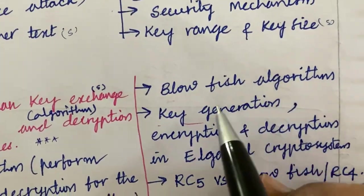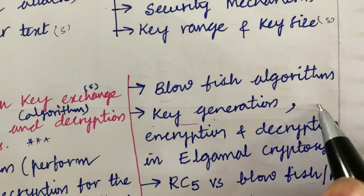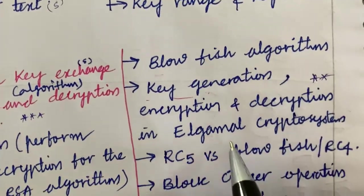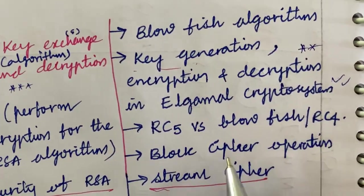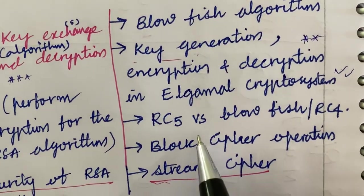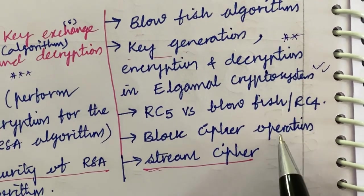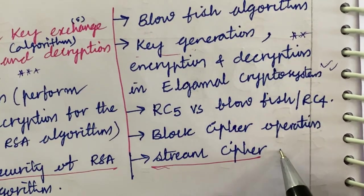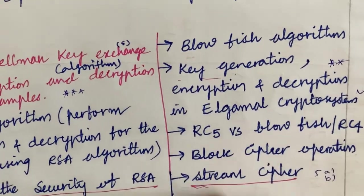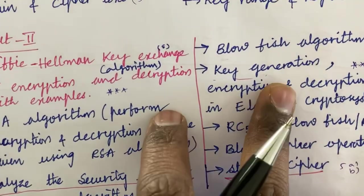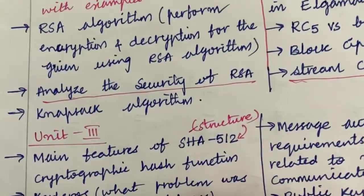5A and 5B is all about the Blowfish algorithm — key generation, encryption, and decryption — which is very important. The Elgamal cryptosystem may be a direct 10-mark question. The difference between RC5 versus Blowfish, and RC4 with block cipher modes of operation and stream cipher, may appear as 5A and 5B questions this time. Make sure to work the short questions from this section as well.